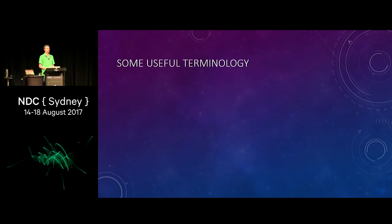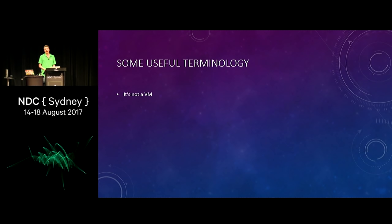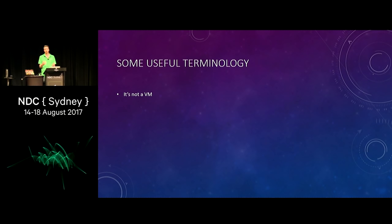I want to start with some useful terminology so we understand what Docker is and the concepts I'm going to introduce. First off, Docker is not a virtual machine. Docker is about isolation. It comes from the Linux and Unix world — a concept called chroot, which is basically creating user space isolation within the kernel. You are almost running something like a full Linux kernel inside of it, but it's still separate from other processes. It's often thought about as process isolation.